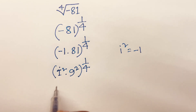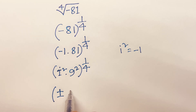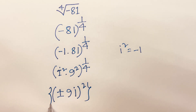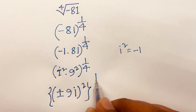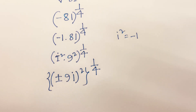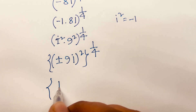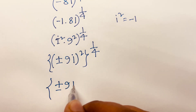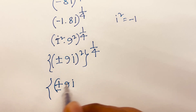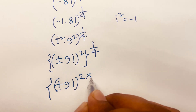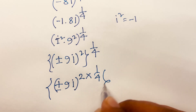Then it will be plus or minus 9i in bracket, squared, raised to the power of 1 over 4.